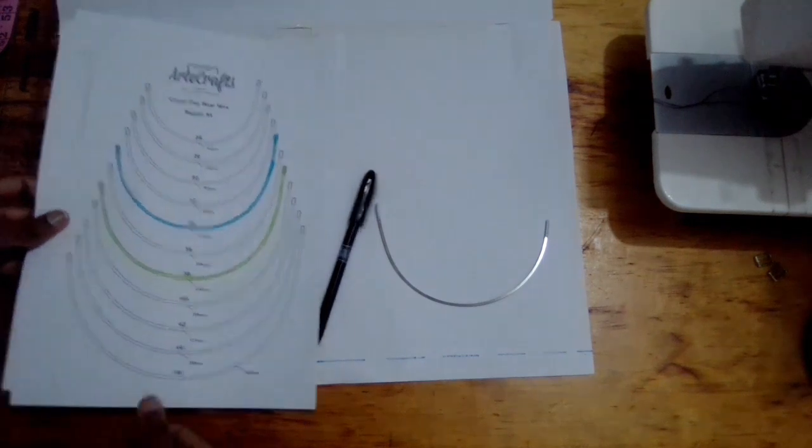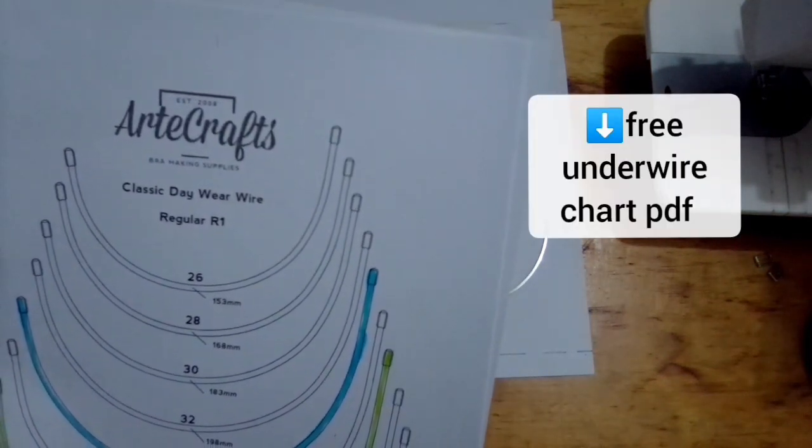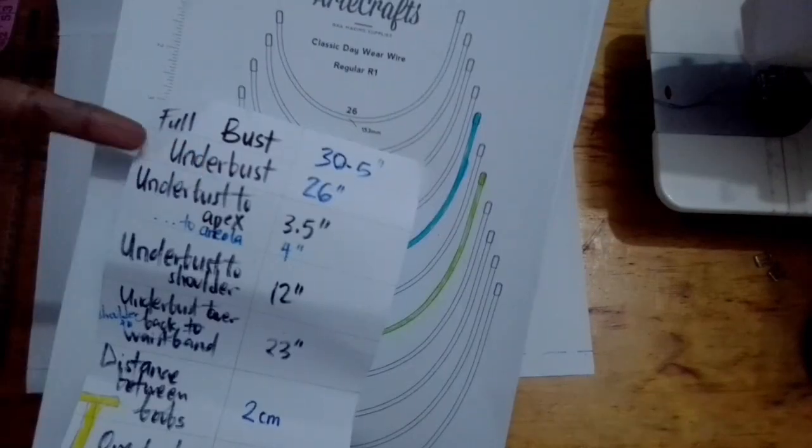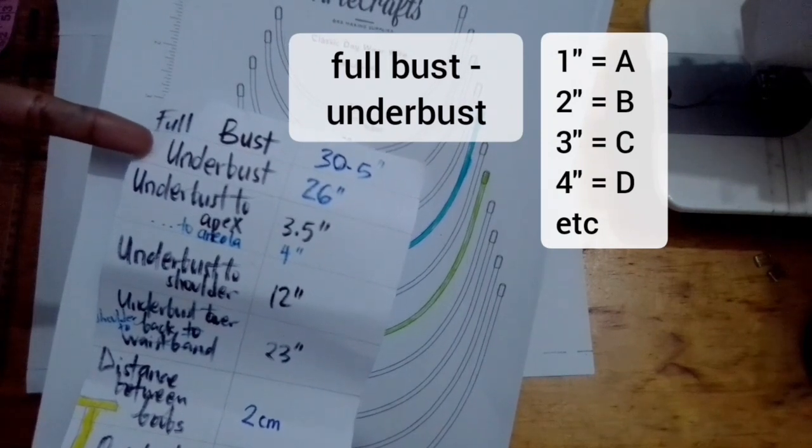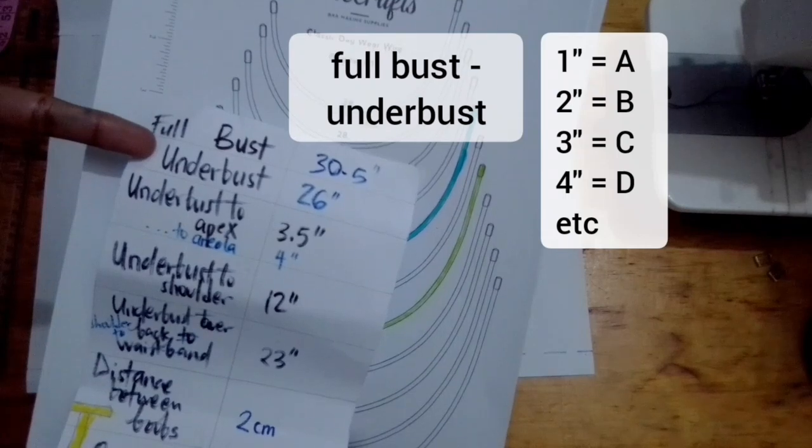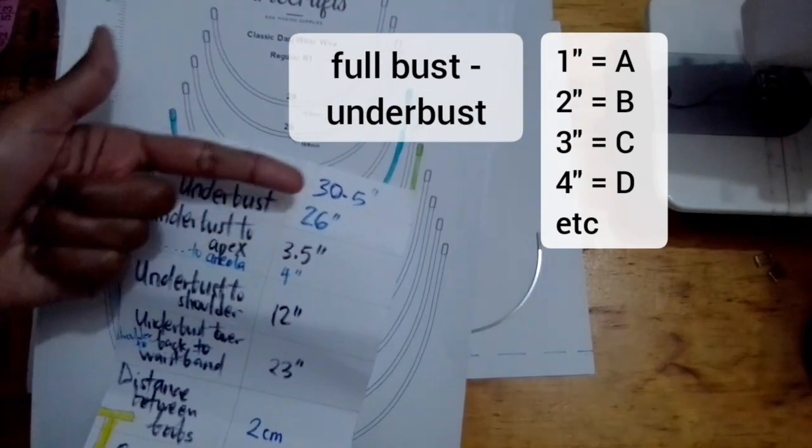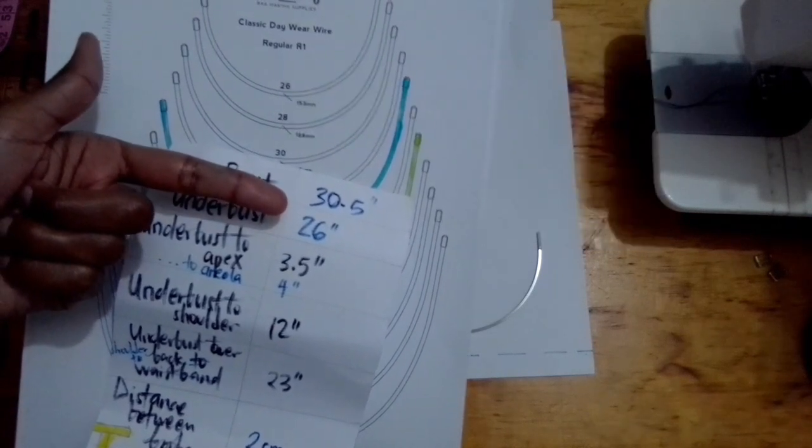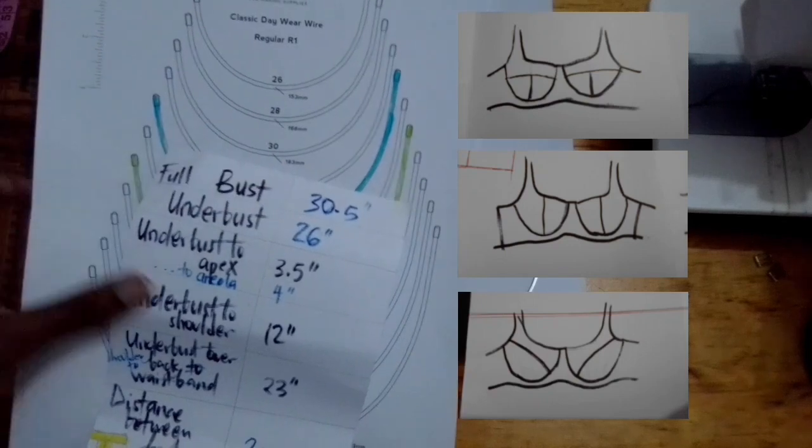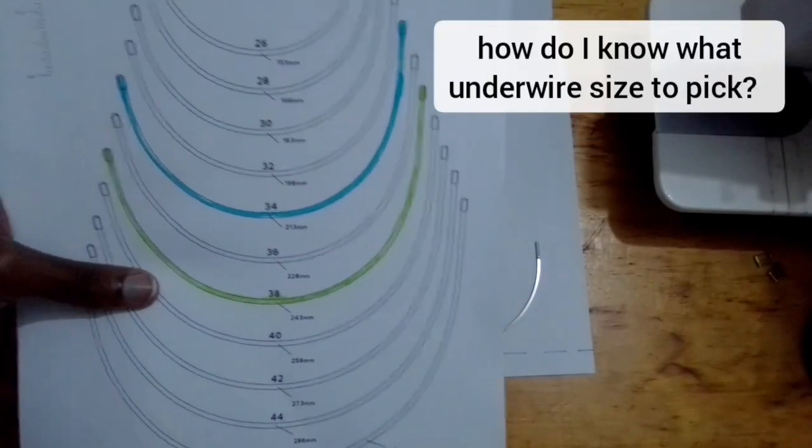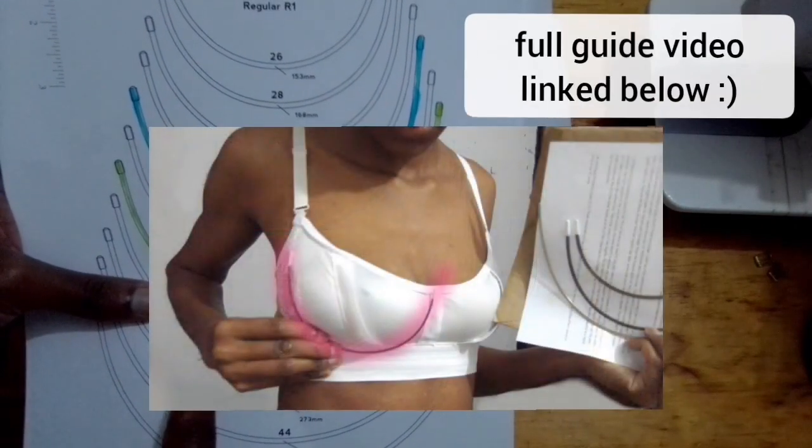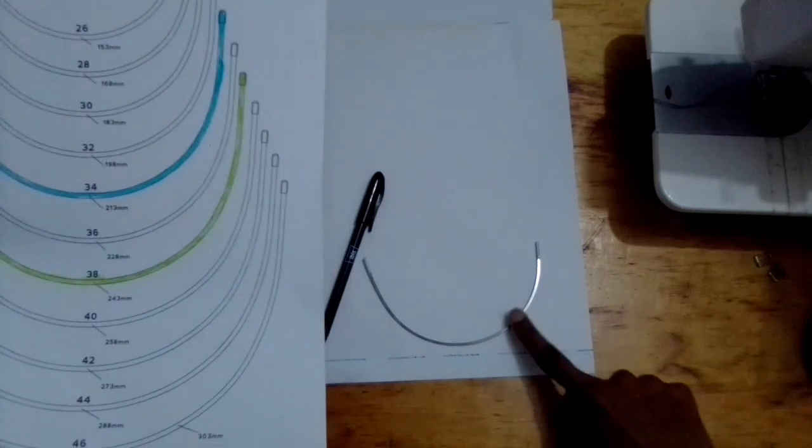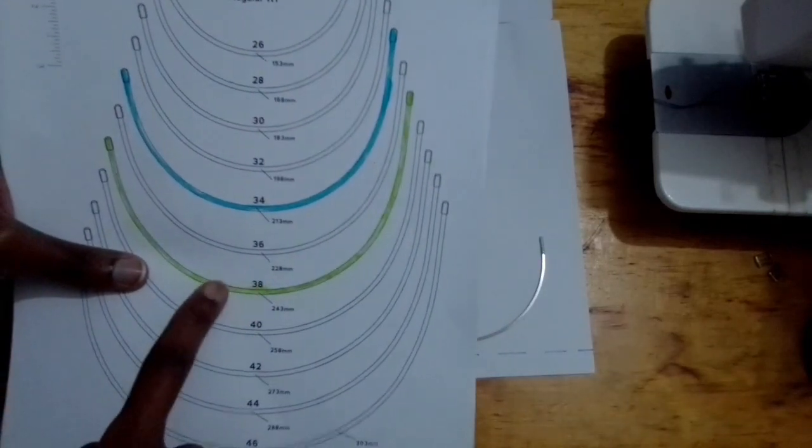You are also going to need the Artecraft Classic Daywear Wire Regular R1 underwire chart. I will link it in the description box below. If the difference between your full bust measurement and your under bust measurement is more than two inches, then it means you're over a B cup. In my case, it's about four inches—30 minus 26 to give me four inches—so that means I'm going to need to add some sort of cups or curving seams in the sports bra pattern. I will show you how to find the underwire size for you in a separate video. I personally fit into the 38 underwire, so if I didn't have an underwire lying around in the house, I would just trace this underwire shape.